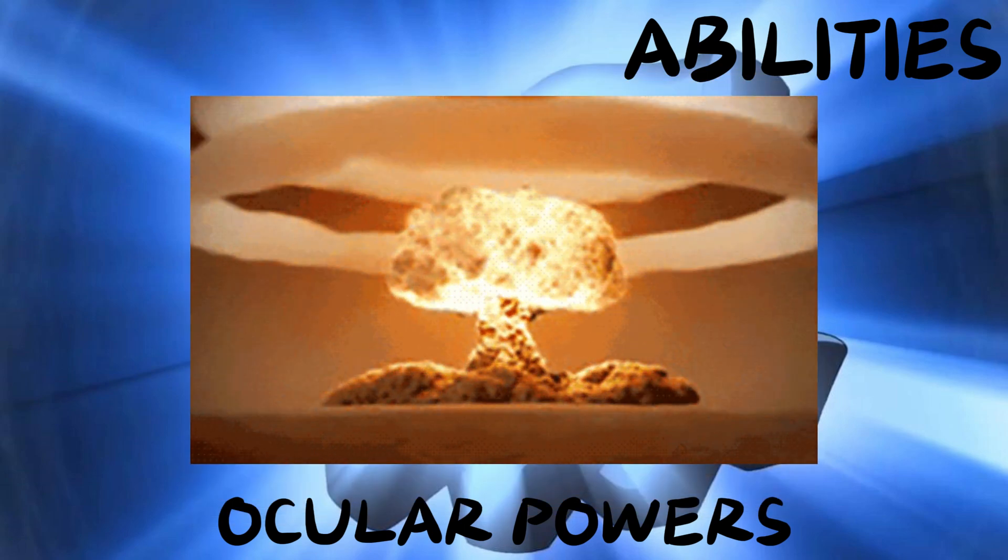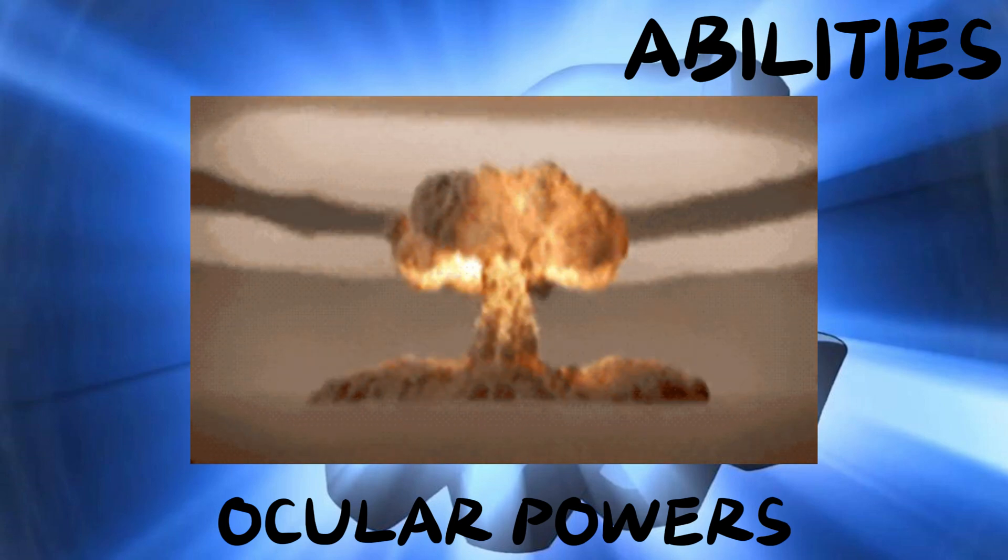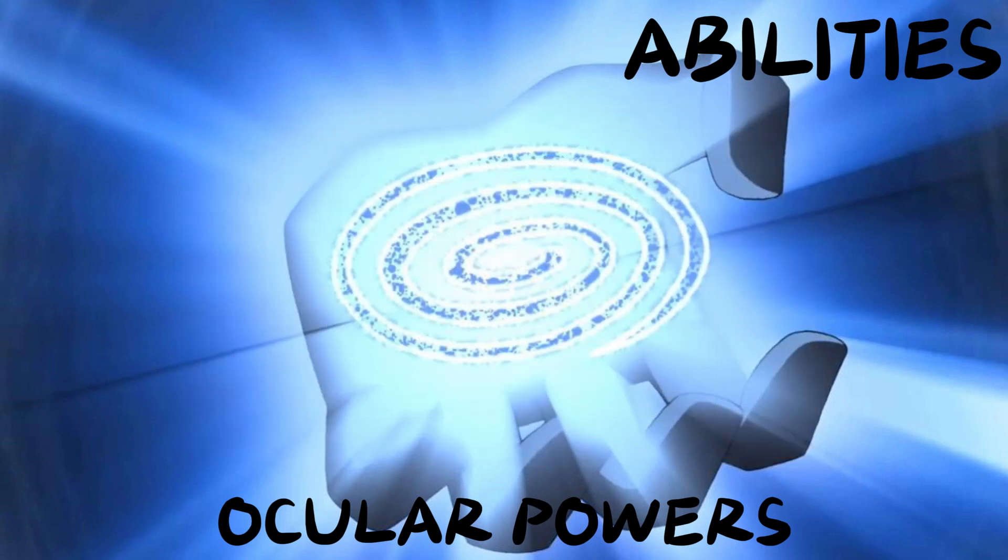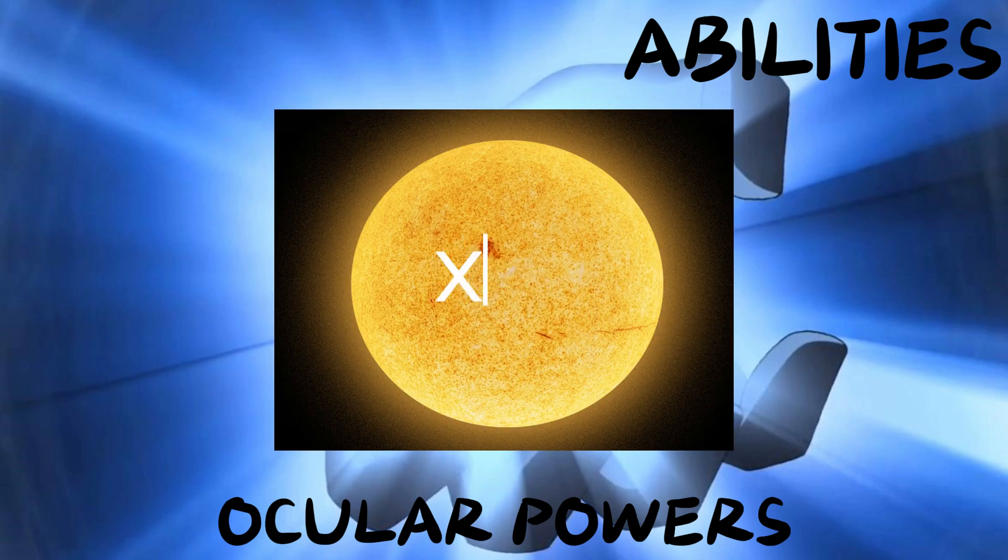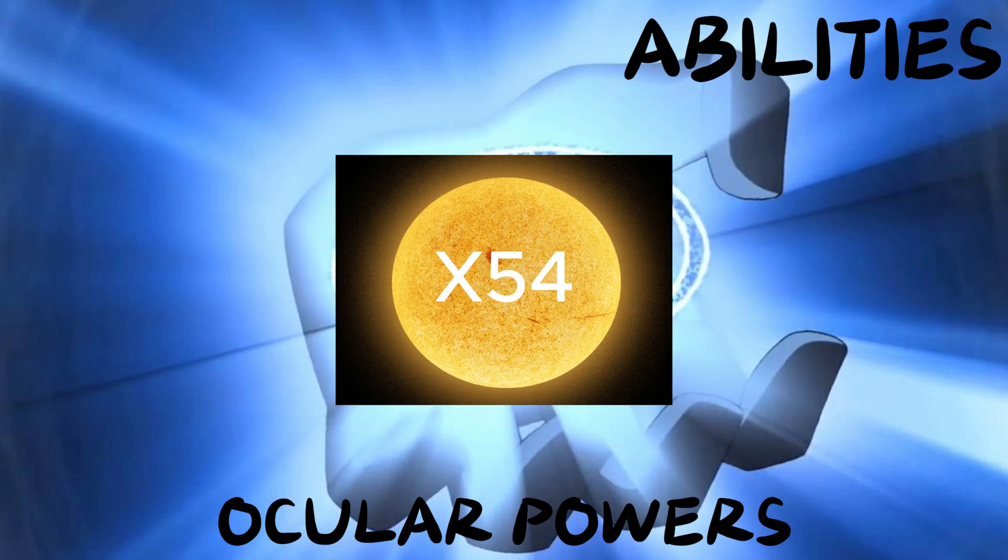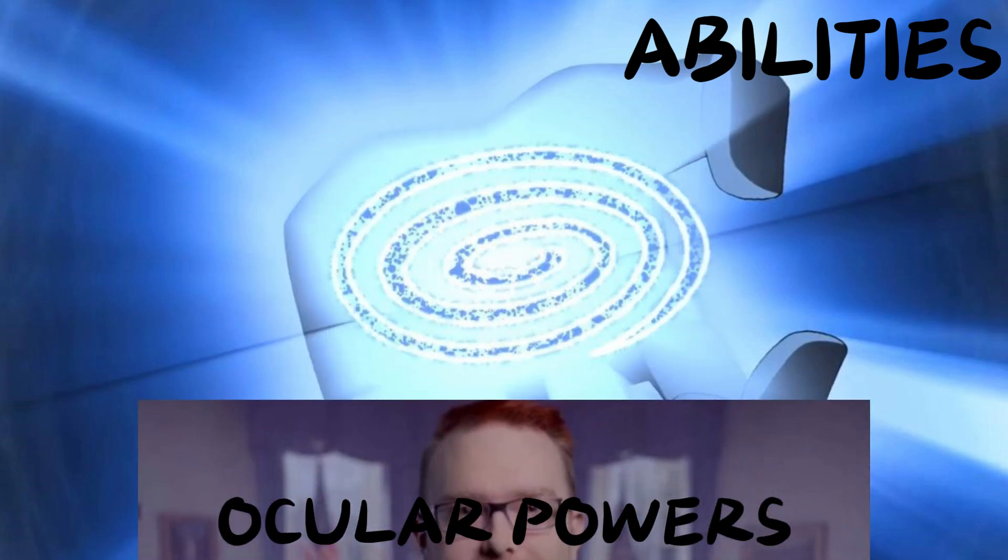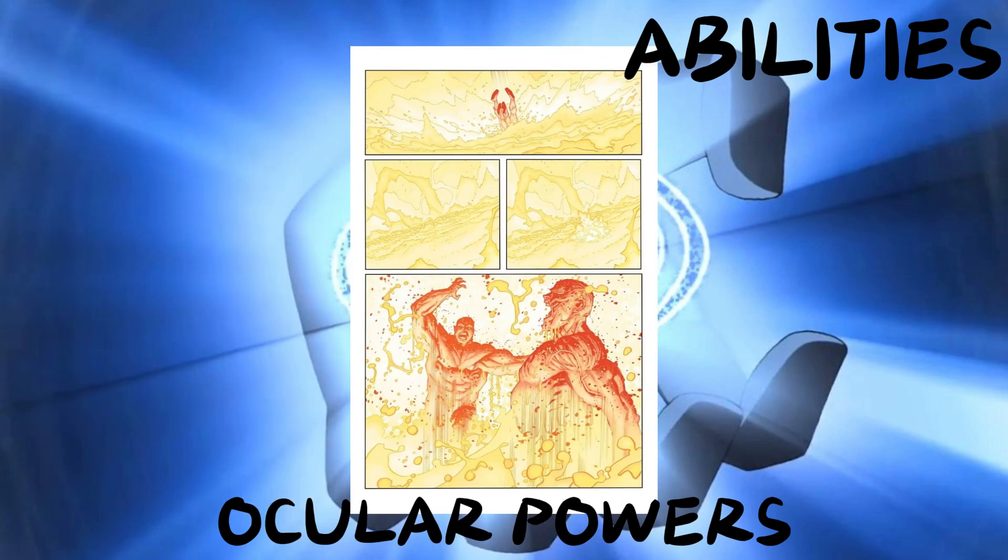And the max heat they can generate with this ability is supposedly on par with a nuclear detonation. And since that's detonation, I'm taking that to mean the actual explosion. Which means their heat vision can reach about 300,000 degrees Celsius or 540,000 degrees Fahrenheit. That's around 54 times the temperature of the surface of the sun. Unless the internet lied to me again. That alone would probably be more than enough to at least severely injure your average Viltrumite.